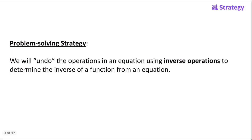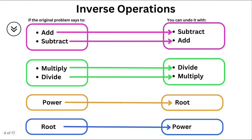Here's our strategy: we're going to undo the operations in an equation using inverse operations to determine the inverse of a function from its equation. As we work through today's examples, a chart of inverse operations will be very helpful. If we see an operation in our original function, we know how to undo it — for example, if we see addition, we undo it with subtraction. We'll follow a reverse order of operations, though sometimes we need to adjust the order a little bit.